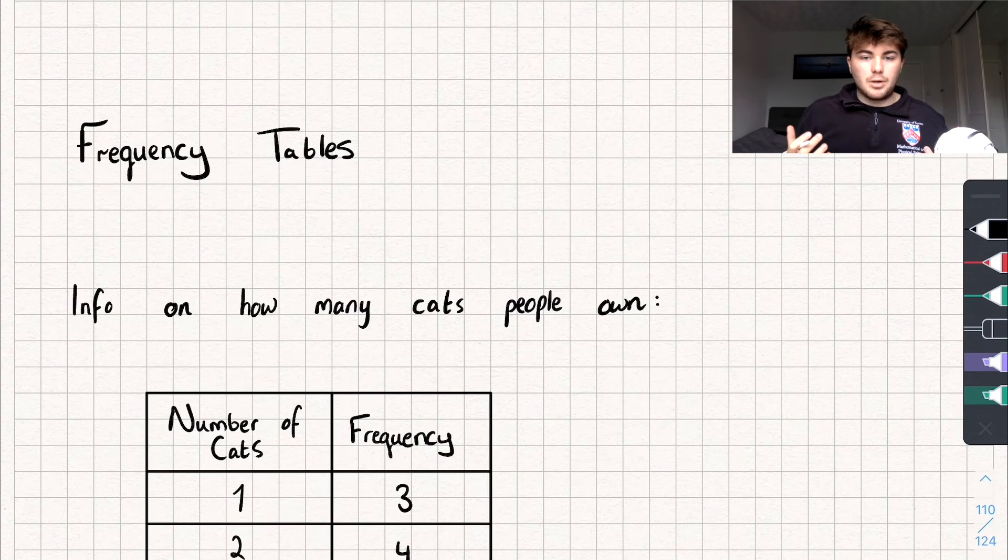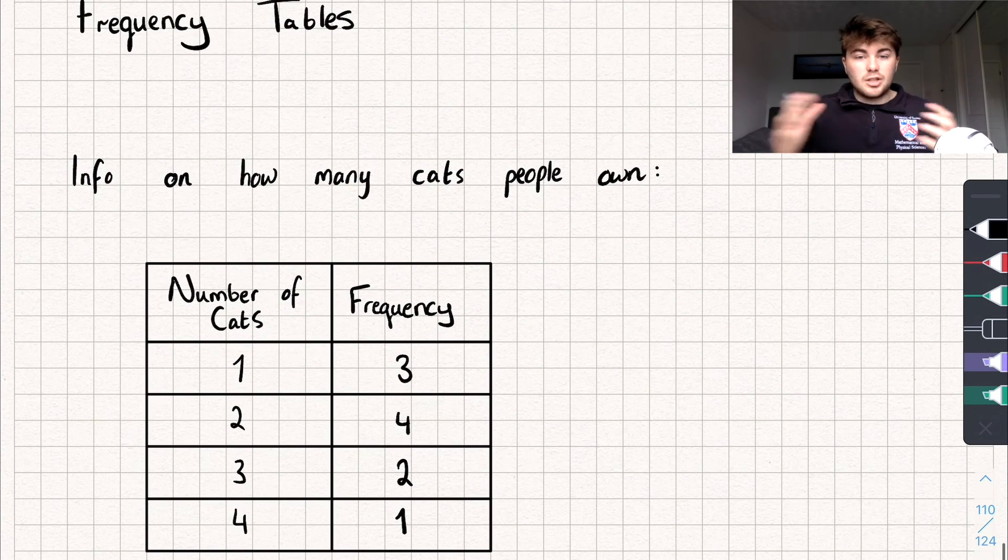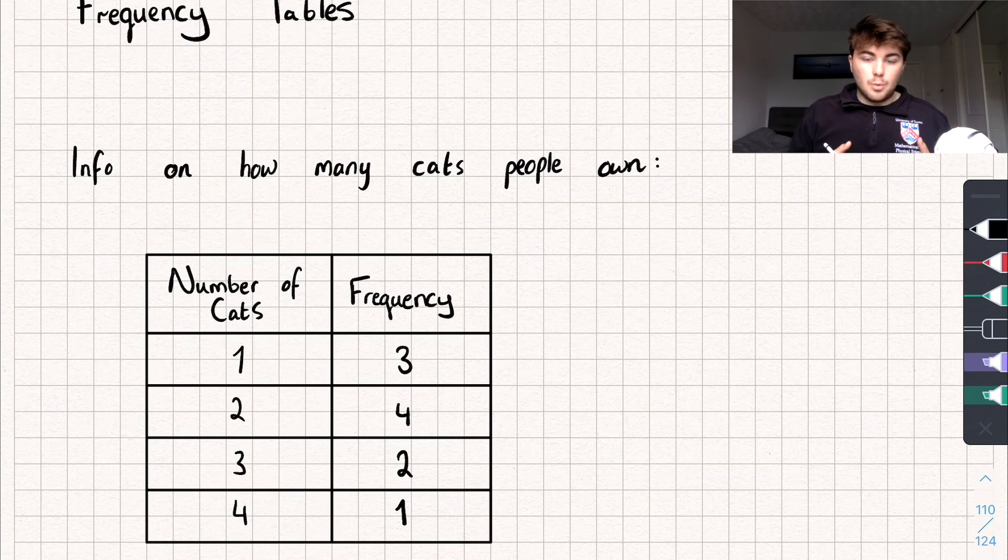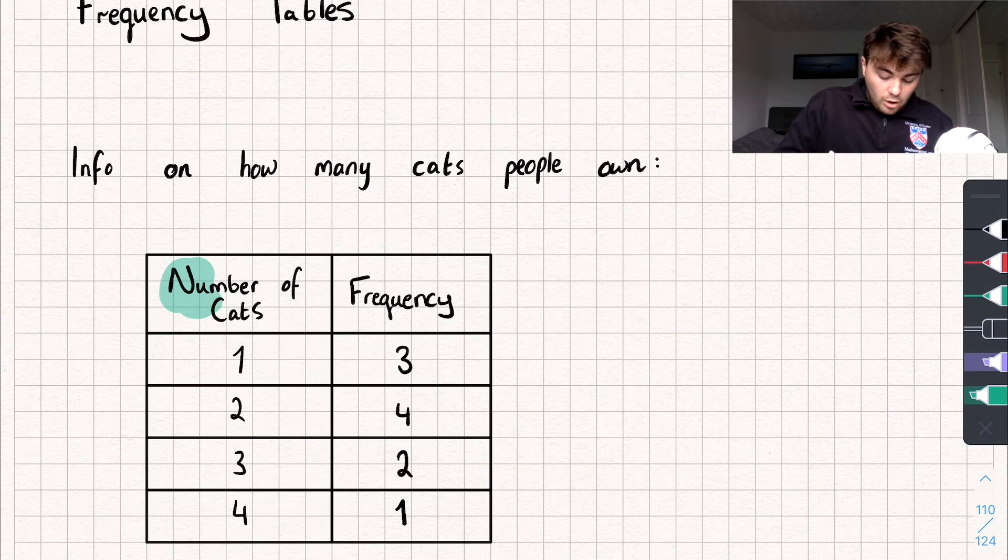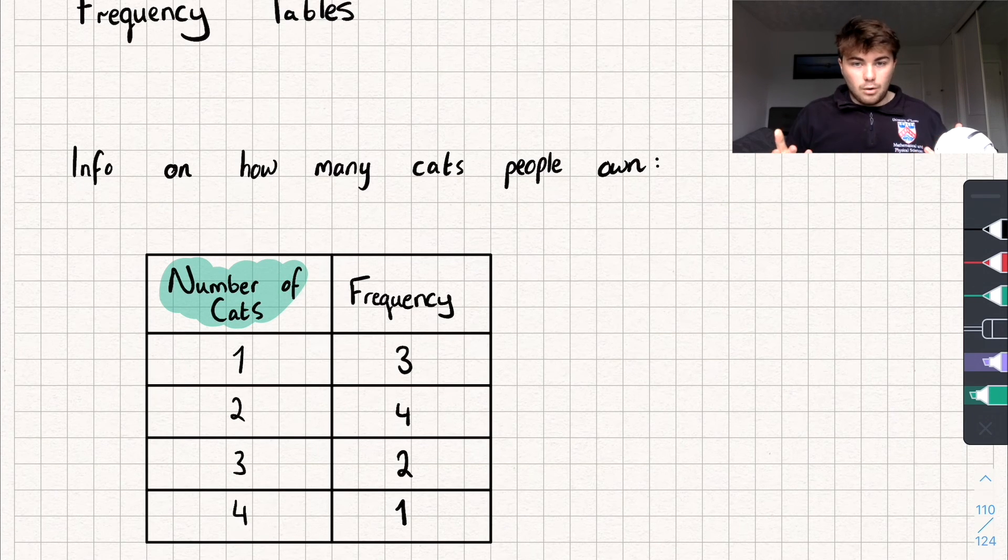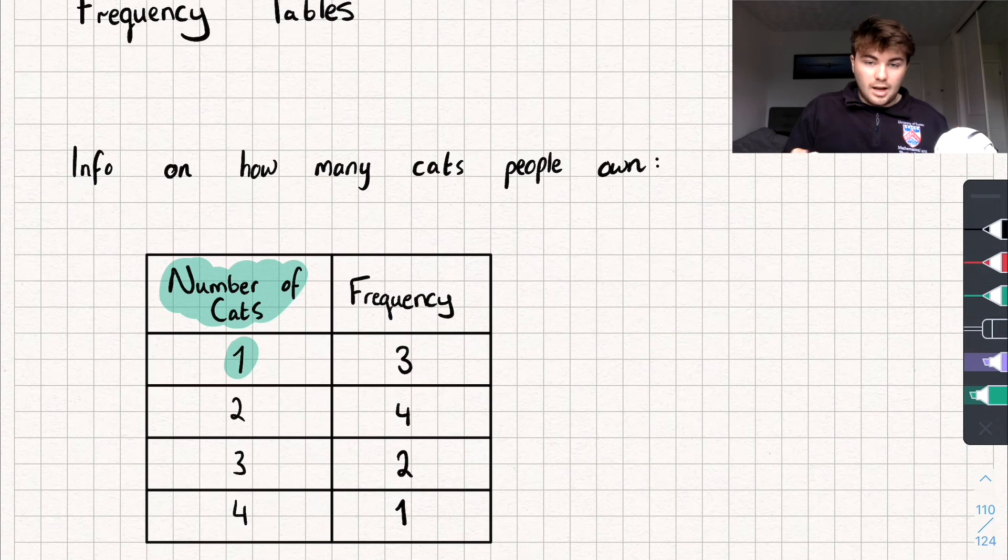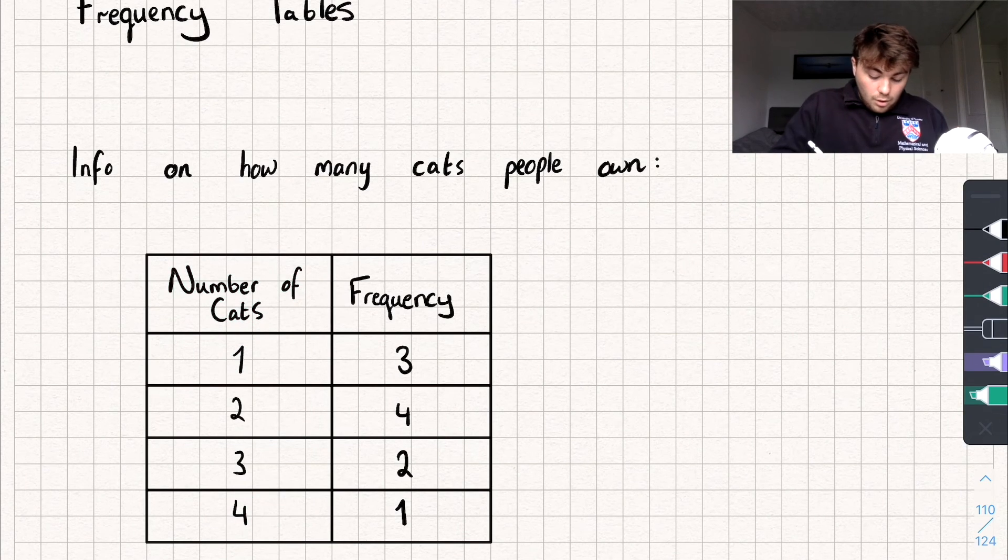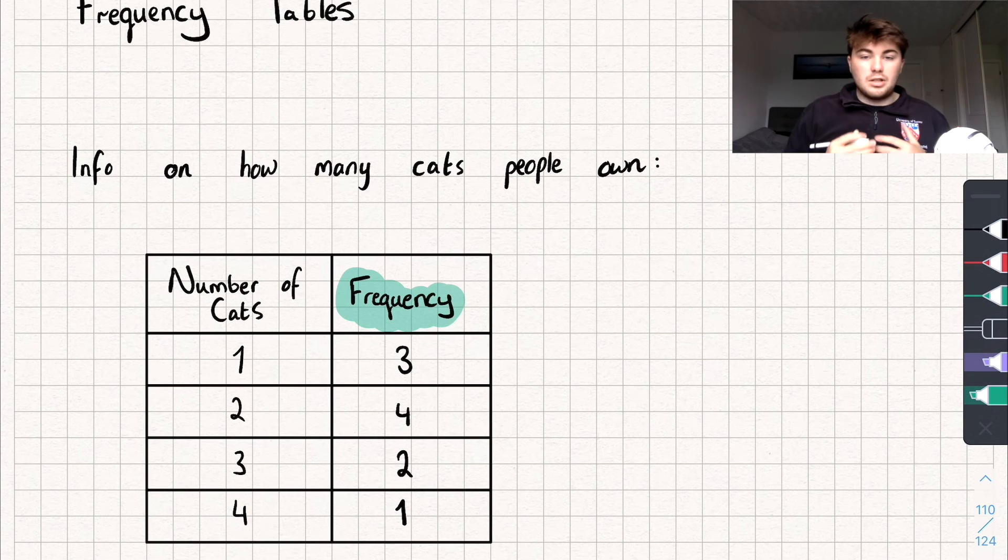So what even is a frequency table? Well it's pretty much just a table that allows us to represent a list of our data. So you can see I've got a frequency table here with information on how many cats people own. One column is the number of cats that people own, ranging from one cat up to four cats. The other column is the frequency which literally just means how much or how many of that thing do we have.